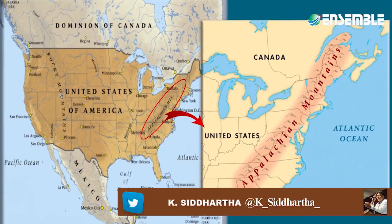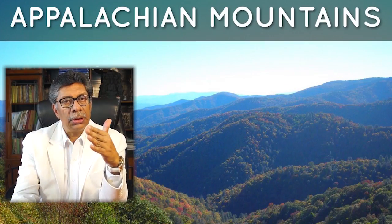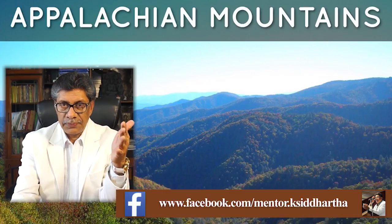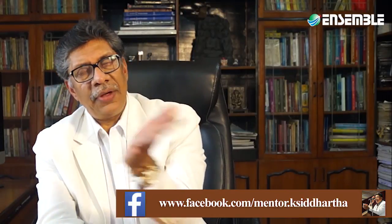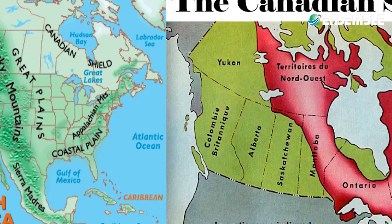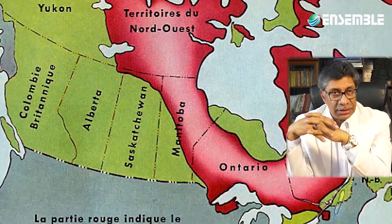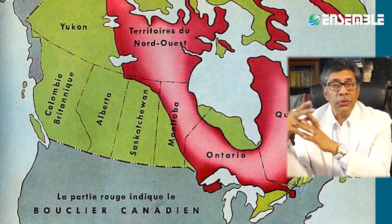The Appalachians are a relic mountain product of Caledonian Orogeny, meaning these mountains formed before the Tertiary Orogeny. The outermost portion is called the Piedmont, and then there is the fall line. The Canadian Shield is the largest physiographic region in North America.